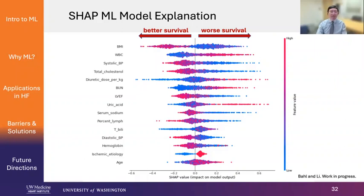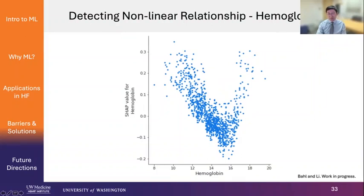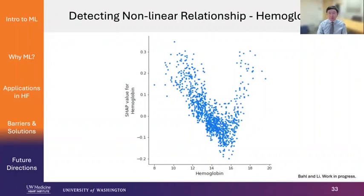But we actually have much more than this. Machine learning is really good at detecting nonlinear relationships. Let's use the example of hemoglobin in this machine learning model for heart failure survival. The y-axis shows the log of the hazard ratio and the x-axis shows hemoglobin values. There is really a U-shaped curve — the lowest hazard is actually around a hemoglobin of 15.5, and both below and above that you have higher risk. This is something that is actually widely known in heart failure. But you can look at all the other variables in the model as well.